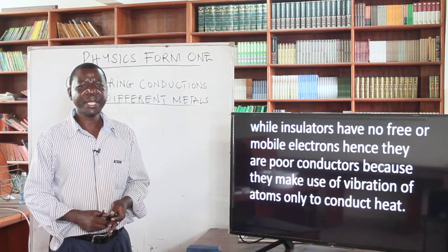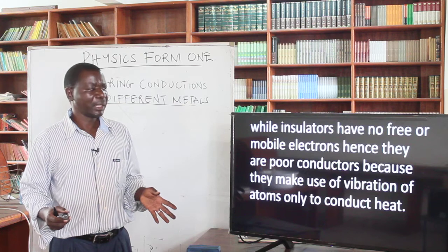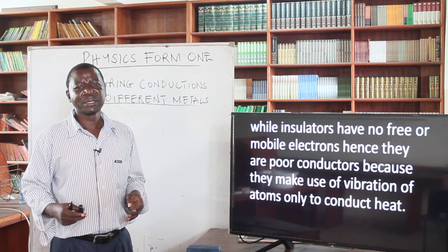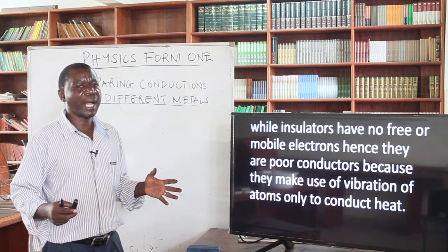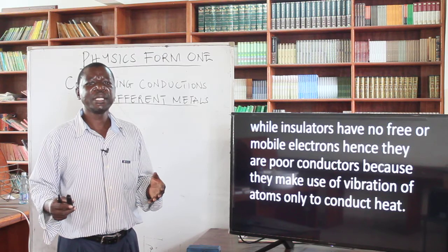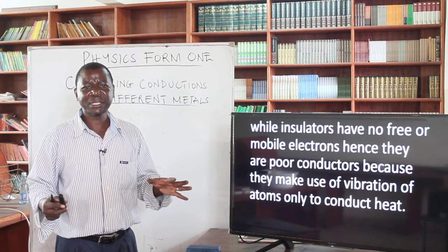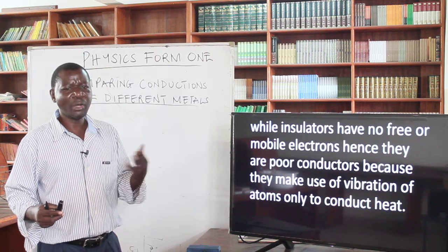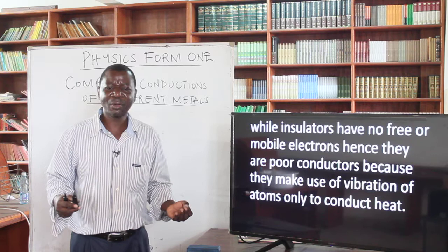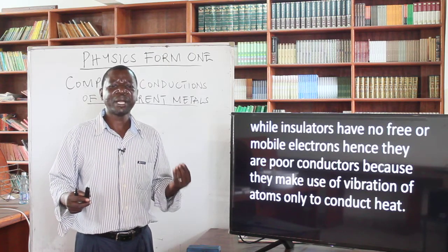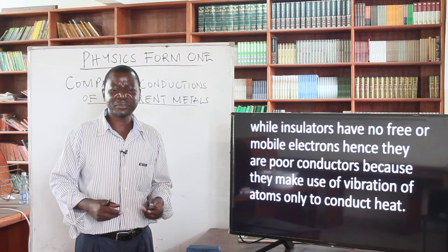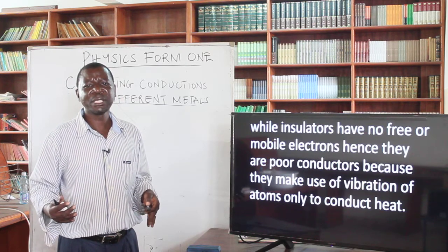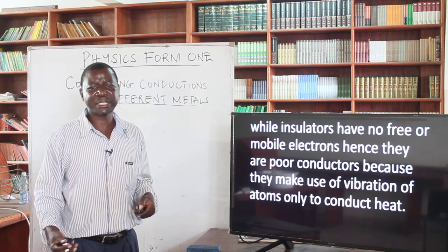Welcome back. We are explaining the reason why non-metals are bad or poor conductors of heat. We have said that free electrons are not present in poor conductors — in the insulators. Because of that, we eliminate the method of conduction through free electrons. The only method that exists for conduction of heat in non-metals is by vibration of atoms, and that method is not very effective. Therefore, non-metals are poor conductors of heat — we can use them for insulation. They are insulators.